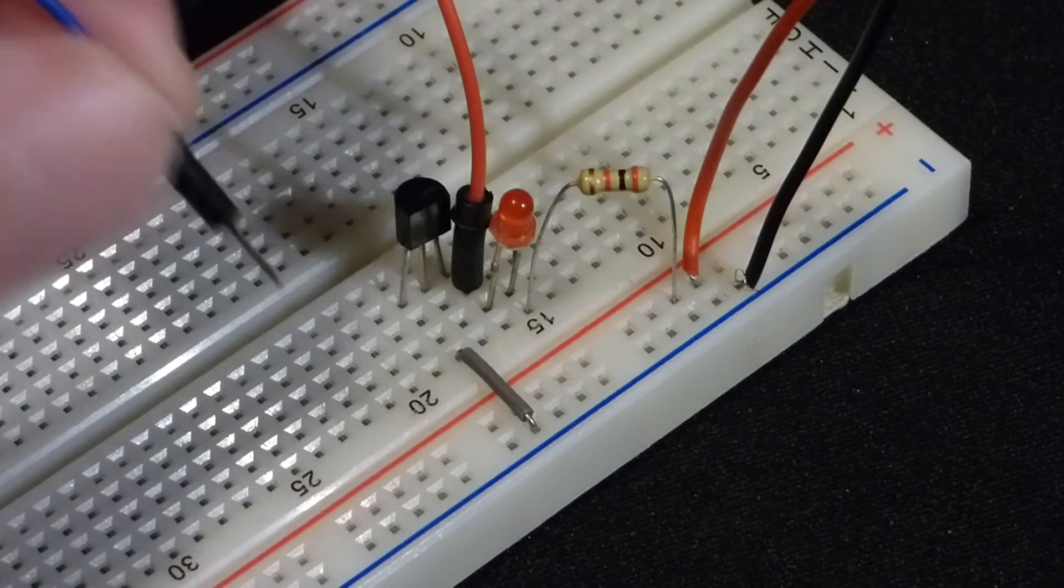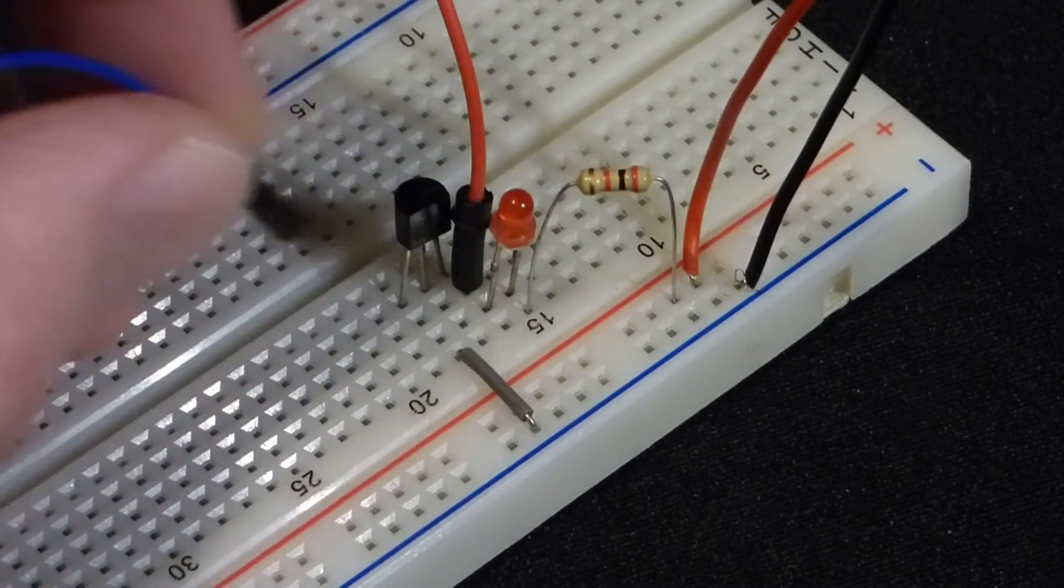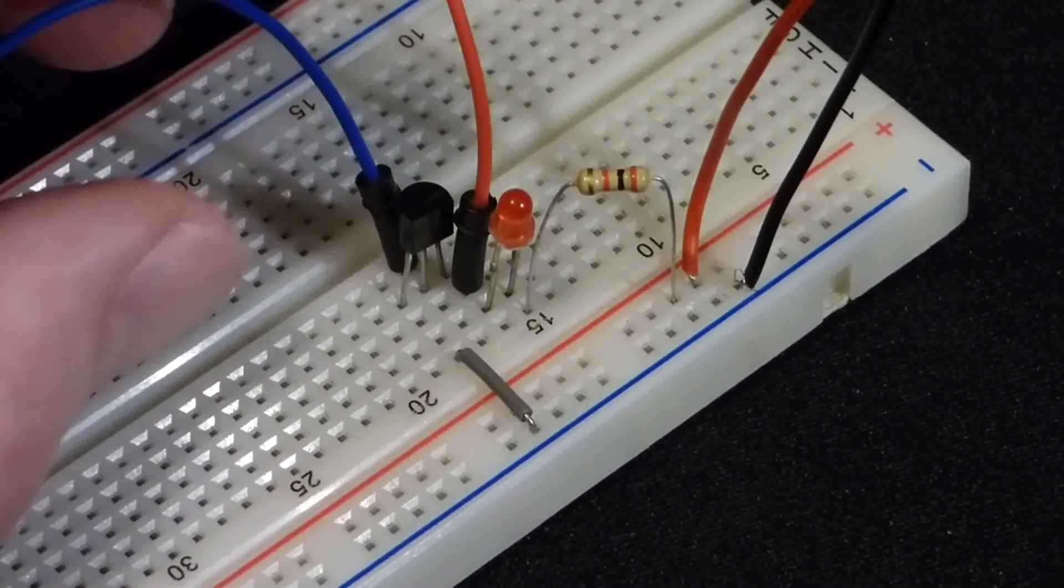And ultimately that path is going to come through this blue wire to the base of the transistor. I'm going to put it behind the transistor though so it's a little easier to see what's going on.